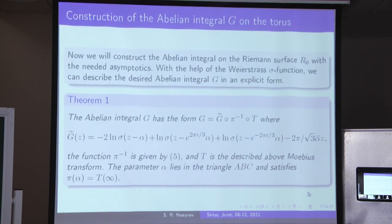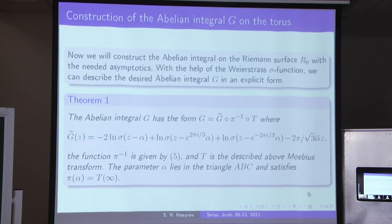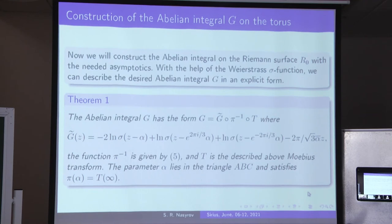This is a very important theorem: how to express the abelian differential on the Riemann surface and find the lift of the abelian integral onto the universal covering. The lift is given in a very explicit form. Here you see alpha and the two points alpha_1 and alpha_2, which correspond to the infinite points on the Riemann surface, along with some additional summand. This is the needed abelian integral on the universal covering.